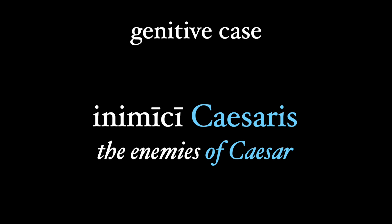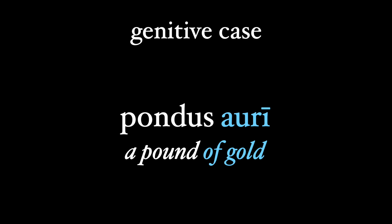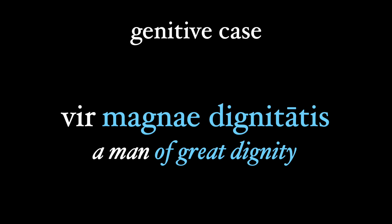In amici Caesaris — the enemies of Caesar — not just any enemies, but Caesar's enemies. Caesaris limits or defines the amici. Pondus auri — a pound of gold. What kind of a pound is it? It's a pound of gold. Hence, auri is in the genitive case. Vir magnae dignitatis — a man of great dignity. The magnae dignitatis helps define or describe the man, and so we put it in the genitive case.